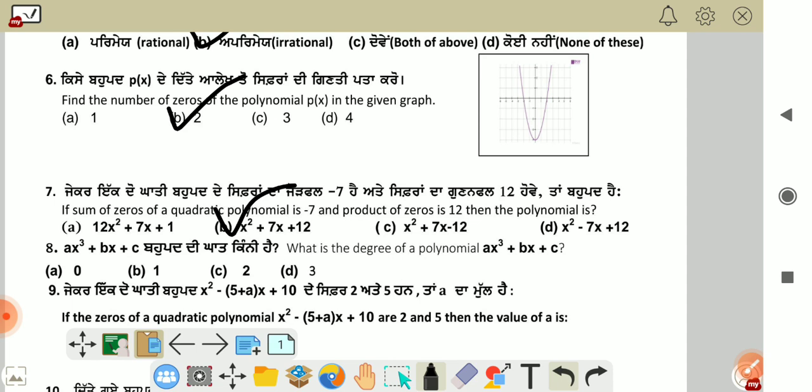Next, what is the degree of the polynomial ax cubed plus bx plus c? See, for any polynomial, the degree is the highest power of x, which is 3. It means the degree is 3.